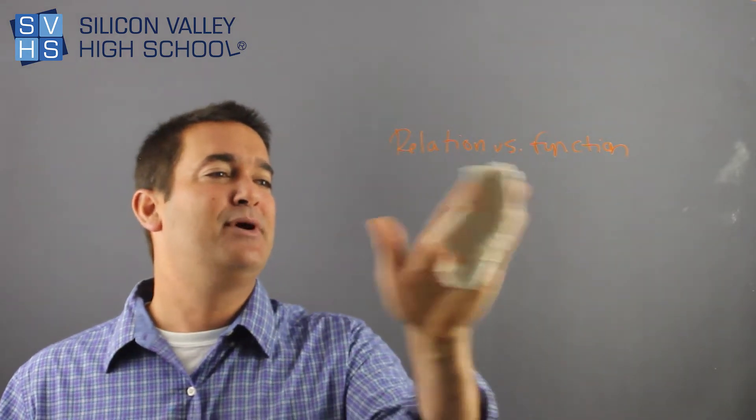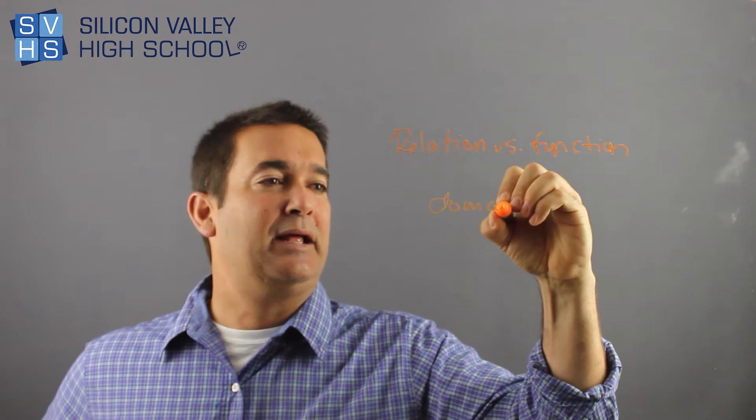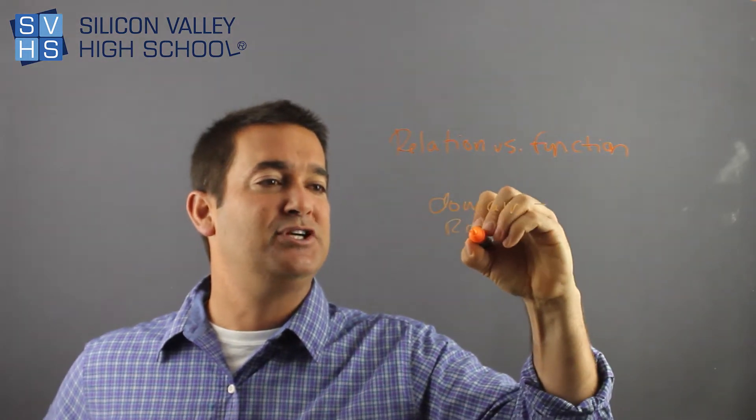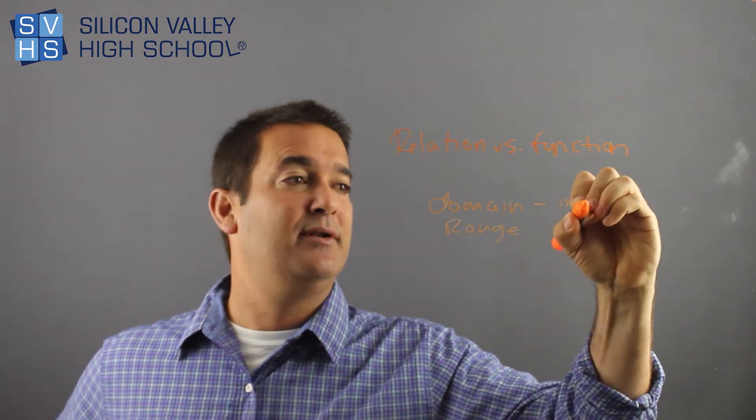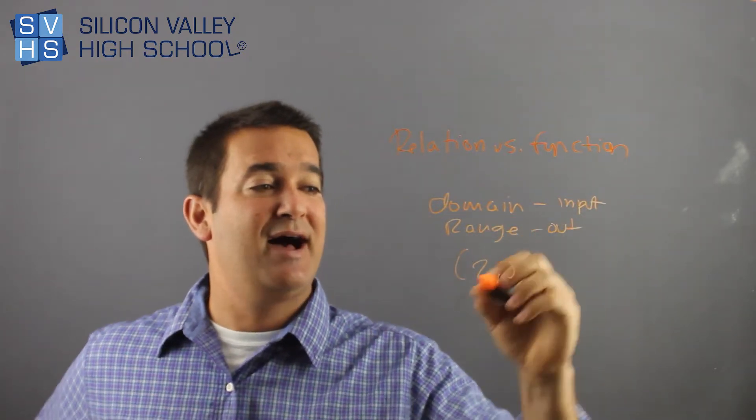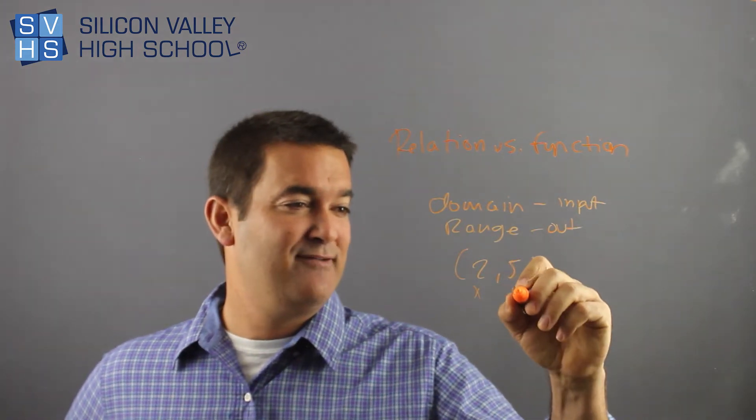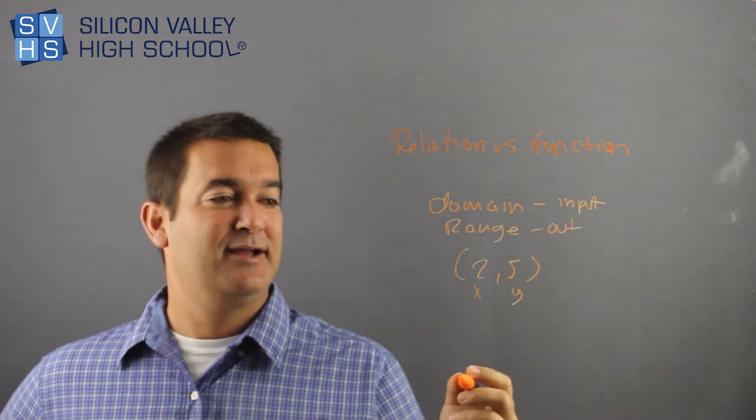Now, I've been talking about input-output. I'm going to give you some slang. The words domain and range just mean input and output. So every time you have a point like 2, 5, domain is all the x values and range is all the y values, right? So you can be like,